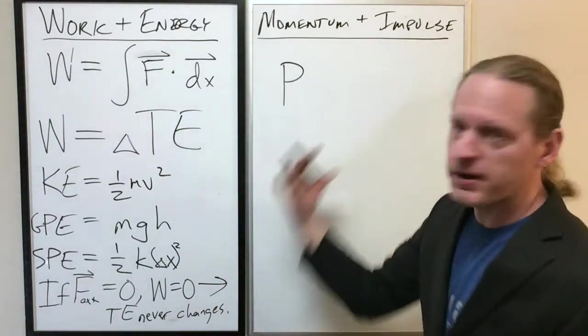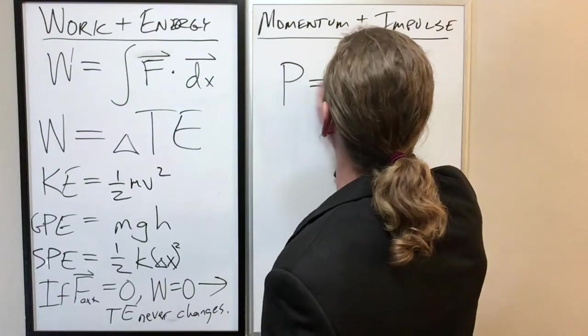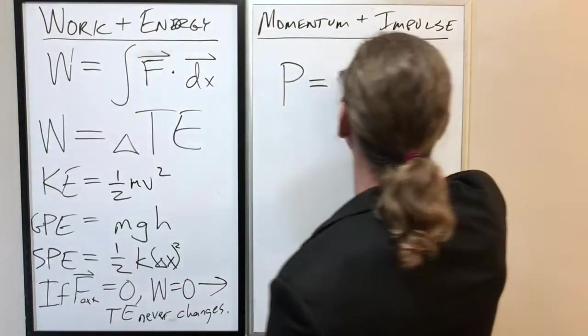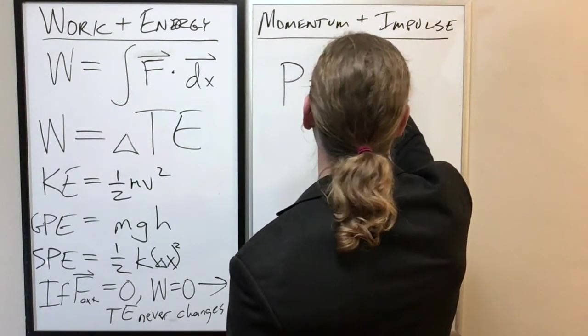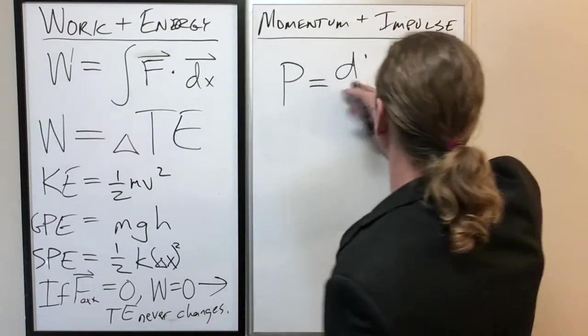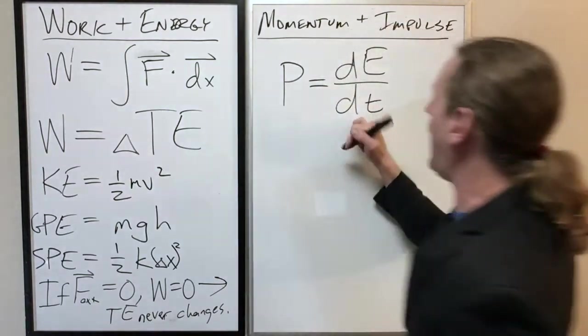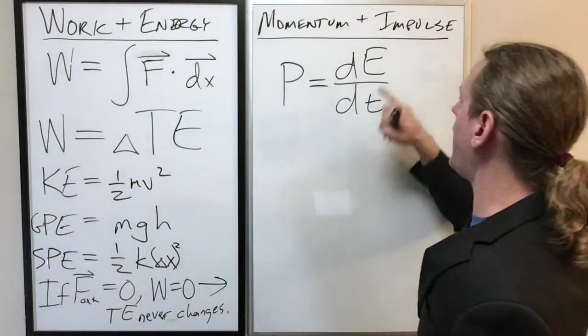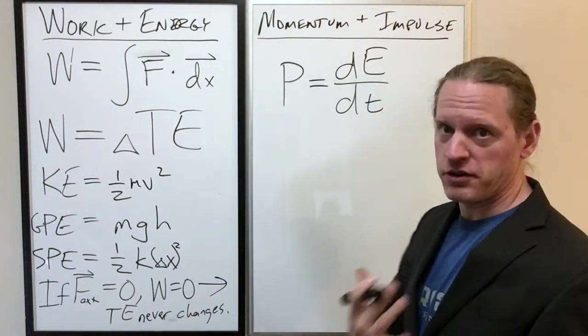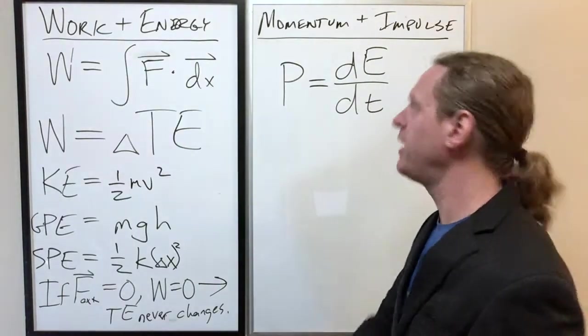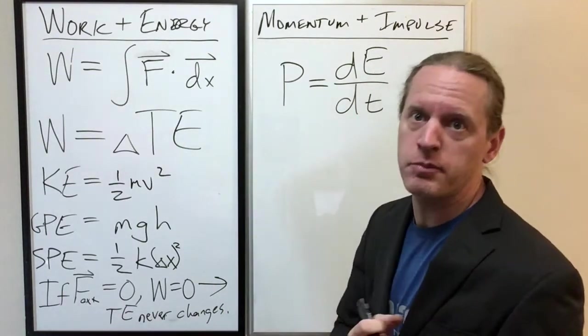Now in this case, P stands for a couple things, but here power, capital P, we define power to be the, well there's two ways to equally well define it. Power is how quickly an object uses energy, in other words, how many joules does it consume per second.